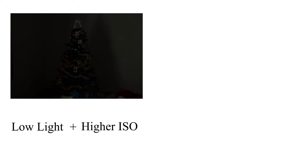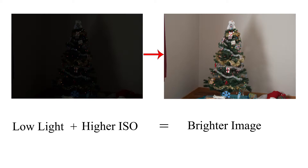So what does this have to do with the ISO in your camera? Well, that ISO works the same way. The higher ISO number you use, the more sensitive your camera will be to light and the brighter your image will be.